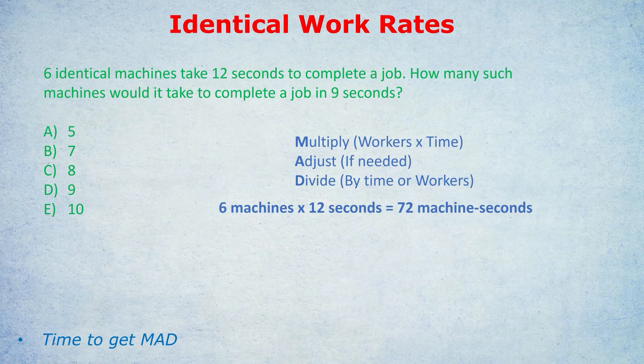A bit like how Einstein combined space and time to get spacetime, we're doing the same with work and time. Next, we must label what we achieved in that time. These 72 machine seconds were what we needed to complete one job. This step may not seem super necessary for this question, but when the questions get harder, you'll be very glad that you labeled it with the task achieved.